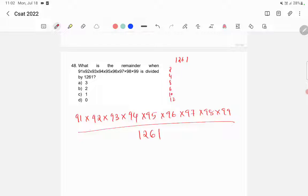What is the sum of the digits of 1261? 1 plus 2 is 3, 3 plus 6 is 9, 9 plus 1 is 10. Since the sum is 10, it is not divisible by 3 or 9.